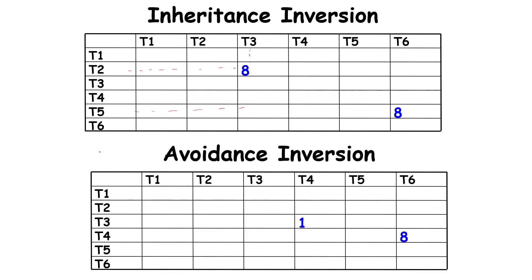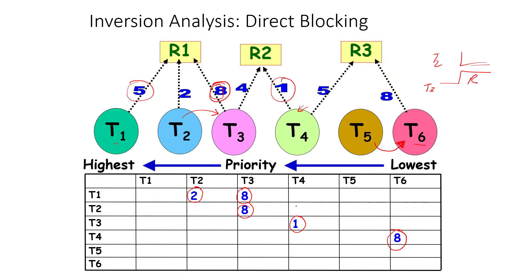Now we can have avoidance inversion. Let us try to explain this number here. T3 can wait for T4 for one time unit. Let's go back here. Assume that T4 has acquired resource R2. In this case, what is the ceiling of resource R2? It's actually the maximum of the priorities of T3 and T4, so the ceiling is basically the priority of T3.